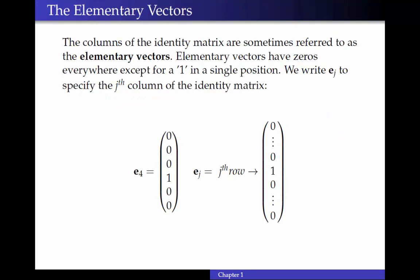And the columns of the identity matrix are sometimes used in different ways, and we refer to them as elementary vectors. Elementary vectors will be zeros everywhere except for a one in a single position. And we'll use ej to specify the jth column of the identity matrix. And if it's the jth column, that means it's all zeros, but it has a one in the jth row. So this subscript on the e is going to tell us where the one is located. For example, e4 is a vector of all zeros with a one in the fourth position. Now, in this case, I haven't actually specified how long this vector is, so we have to find that out from context or it will be specified using some of the notation that was listed before in the previous tutorial.